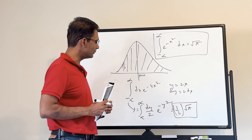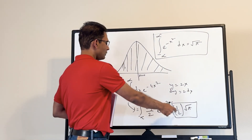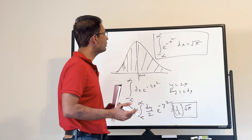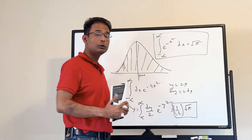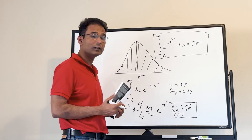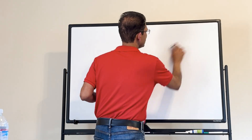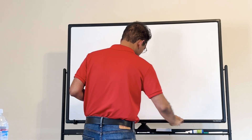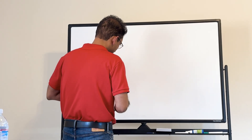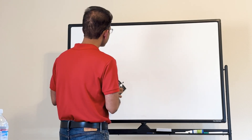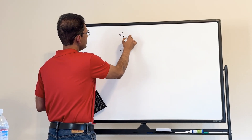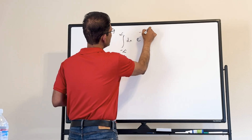This result shows how to use the basic Gaussian integral to evaluate other formally similar integrals. Let's do another integral from the book: the integral from minus infinity to plus infinity of e to the minus (x minus mu) squared over two sigma squared dx.